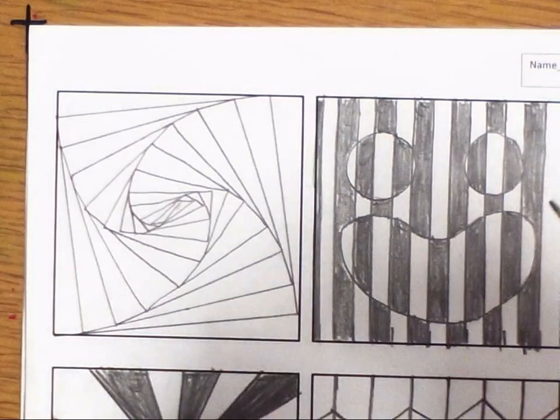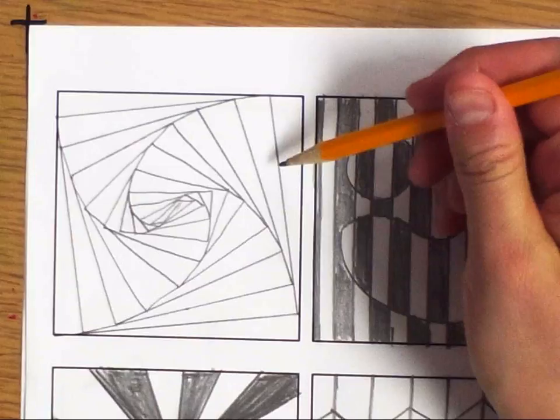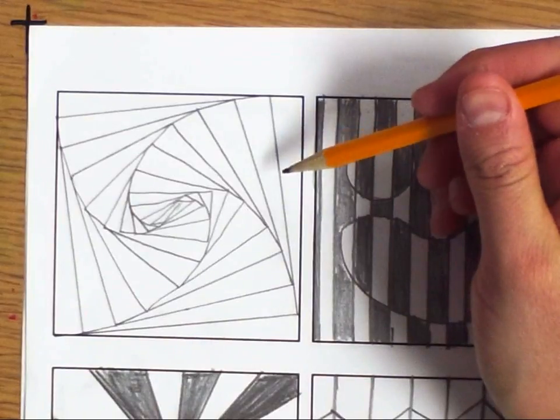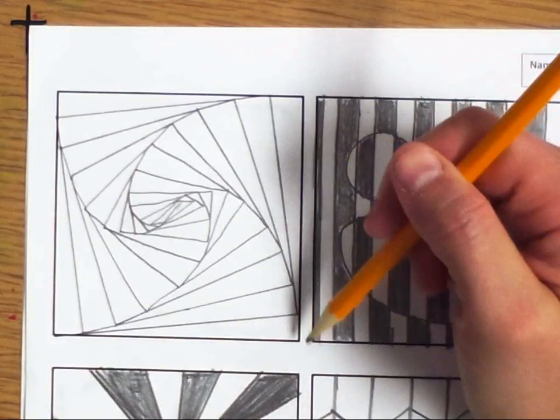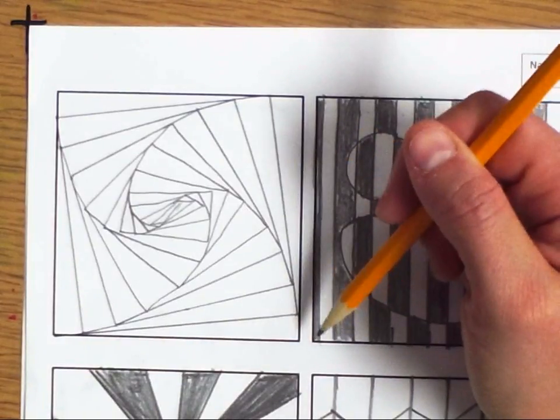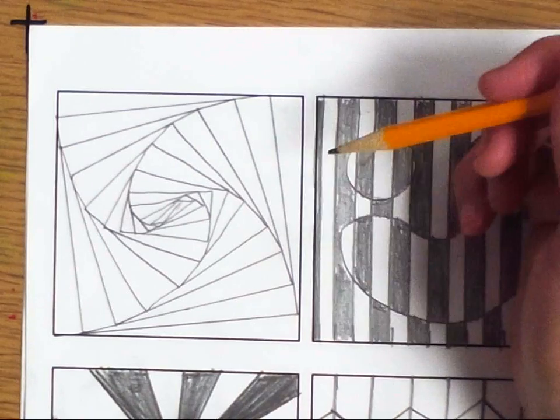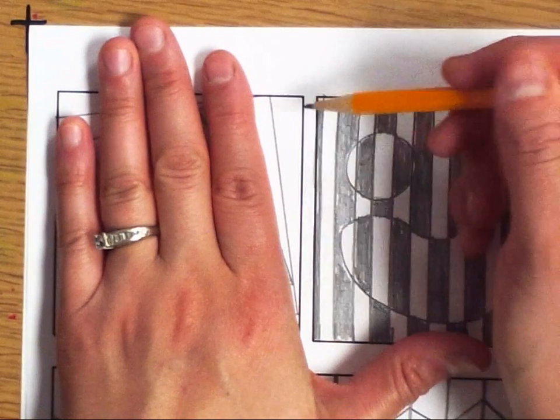We are going to attempt to make this optical illusion called the twisted square, and it's really quite simple because all we're going to be making is these right triangles.